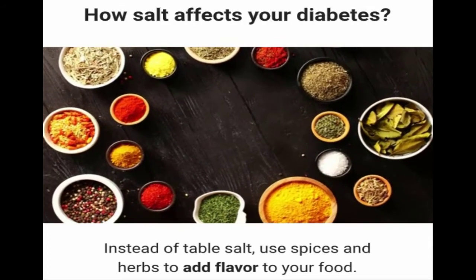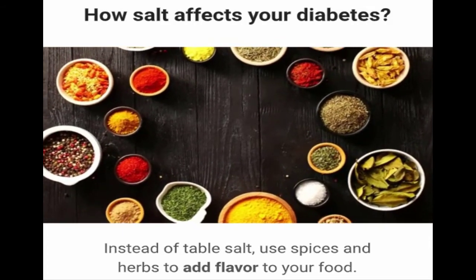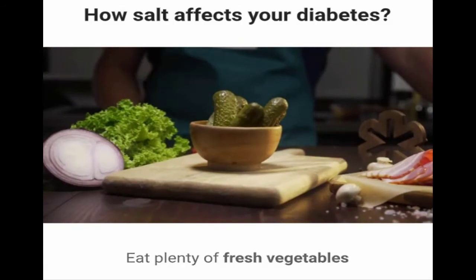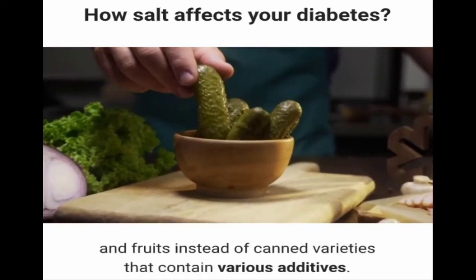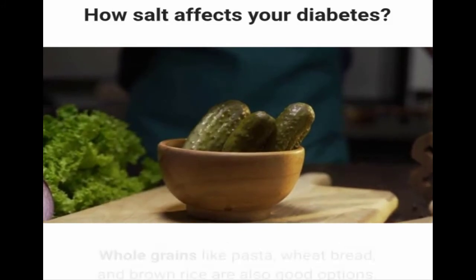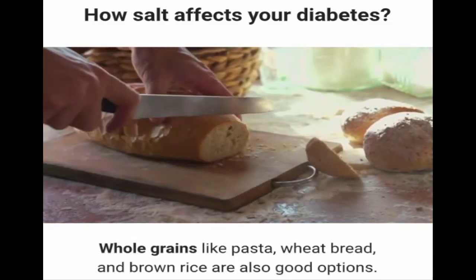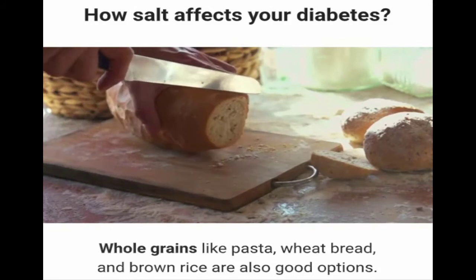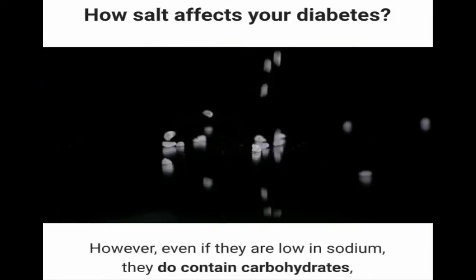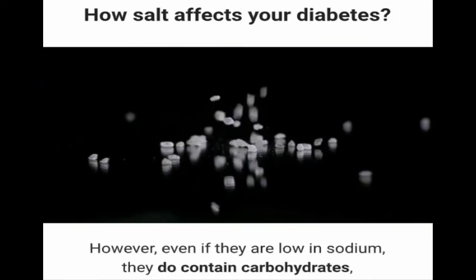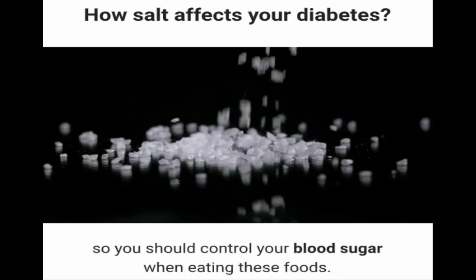Instead of table salt, use spices and herbs to add flavor to your food. Eat plenty of fresh vegetables and fruits instead of canned varieties that contain various additives. Whole grains like pasta, wheat bread, and brown rice are also good options; however, even if they are low in sodium, they do contain carbohydrates, so you should monitor your blood sugar when eating these foods.